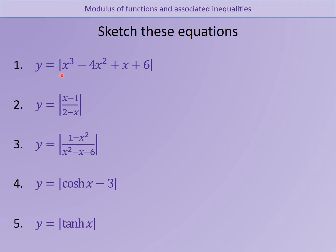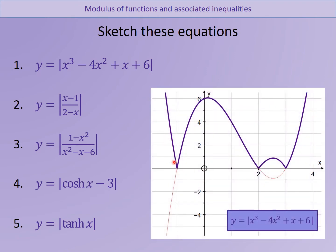Hopefully you managed to plot this cubic function just here - you thought about factorising it, you found out where it crosses, and you should have got something like that. So you can see the solutions: minus one, two, and three, and you've reflected anything negative up to positive. Absolutely perfect.